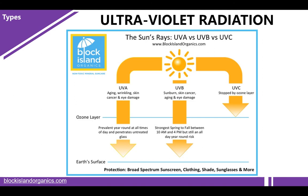UVA can cause aging, wrinkling, skin cancer, and eye damage. It is prevalent year-round at all times of day and penetrates untreated glass. UVB can cause sunburns, skin cancer, aging, and eye damage, and is strongest in spring to fall between 10 a.m. to 4 p.m., but is still an all-day, year-round risk. UVC is blocked by the ozone layer.